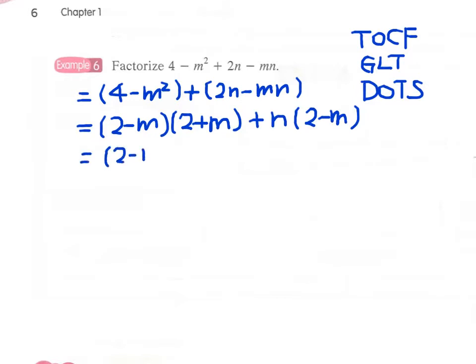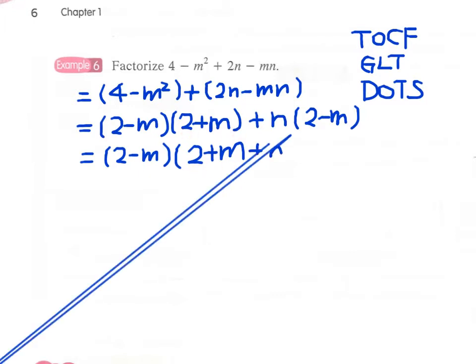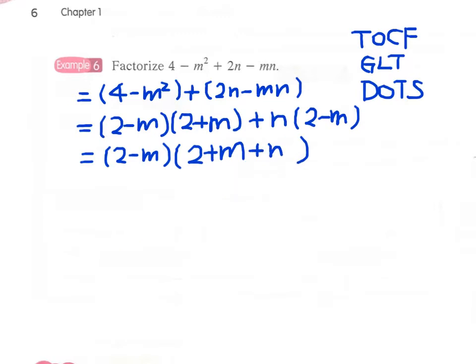We are lucky because both groups share the common factor 2 minus m. Therefore we can write 2 minus m times 2 plus m, with 2 plus m left from the first group and plus n left from the second group. We cannot find any further factors, so this is our final answer.